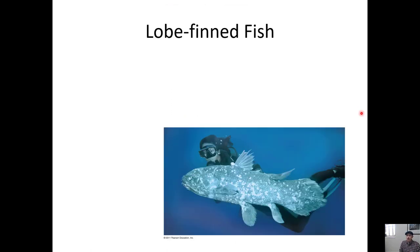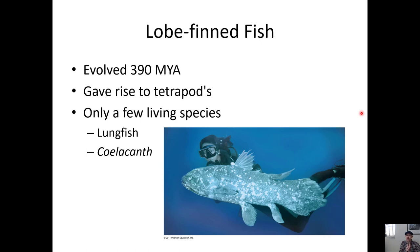Now the lobe-finned fish are another group of Osteichthyans. These are the groups that gave rise to amphibians, reptiles, and mammals, so we are related to these a little more closely. They are called lobe-finned fish because the bones in their fins are the same bones that we have in our hands.